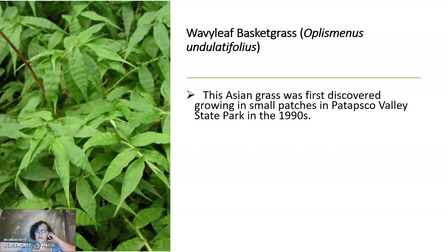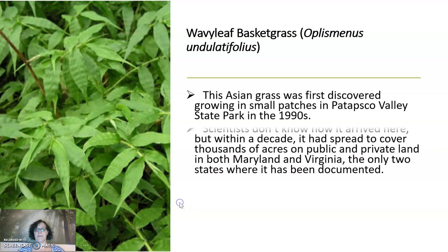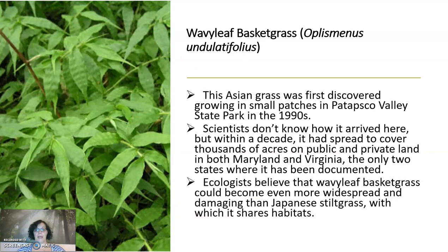This Asian grass was first discovered growing in small patches in the Patapsco Valley State Park in the 1990s. Scientists don't know how it got here, but within a decade it had spread to cover thousands of acres in public and private land in both Maryland and Virginia — the only two states where it's been documented. Scientists believe that wavy leaf basket grass could become even more widespread and damaging than Japanese stilt grass, which it shares habitats with.